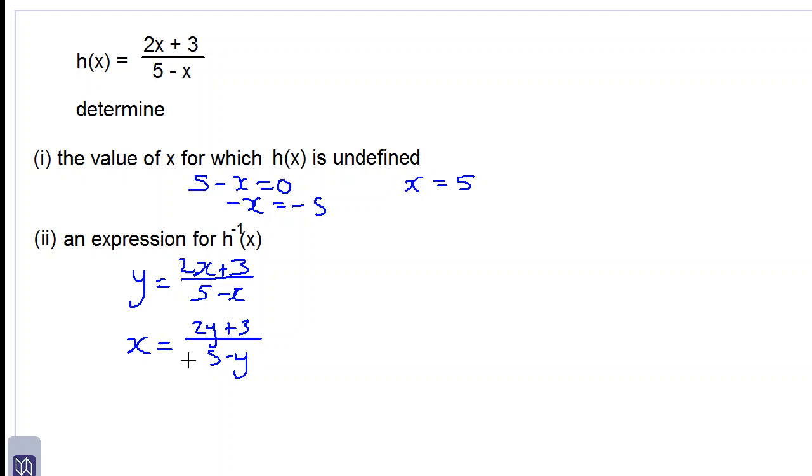Let's multiply both sides by 5 minus y, so we have x times 5 minus y is equal to 2y plus 3. We expand this bracket. x multiplied by 5 is 5x minus x times y is xy, and that equals 2y plus 3.